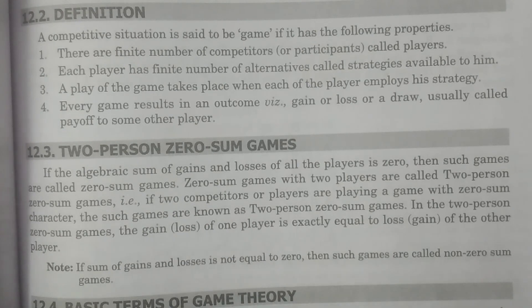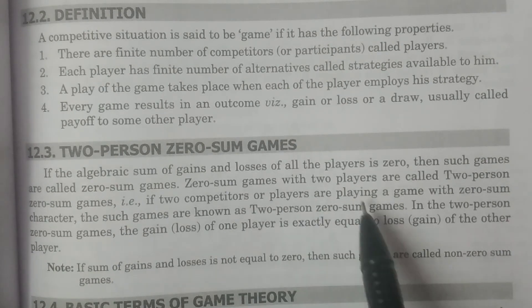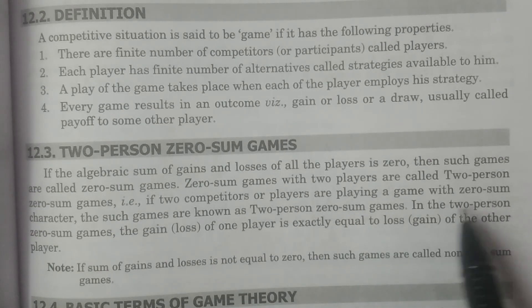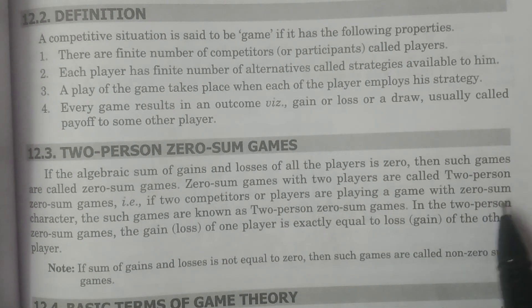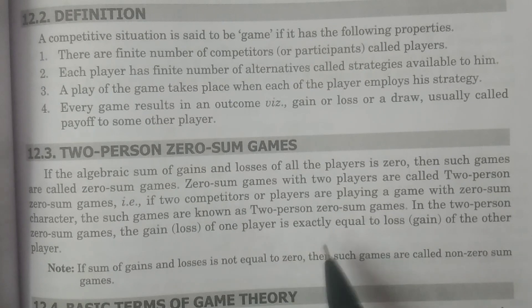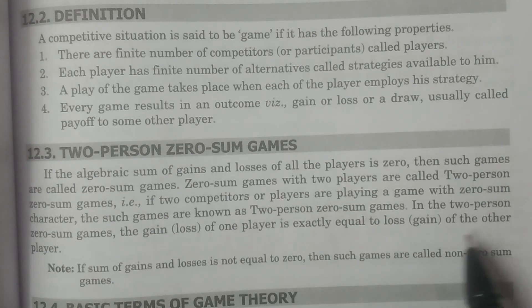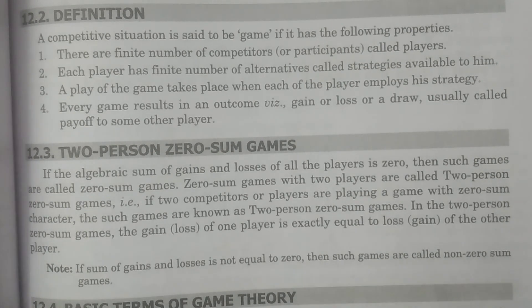Such games are called zero-sum games. Zero-sum games with two players are called two-person zero-sum games. If two competitors or players are playing a game with a zero-sum character, such games are known as two-person zero-sum games. In two-person zero-sum games, the gain of one player exactly equals the loss of the other player.